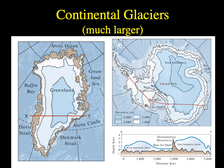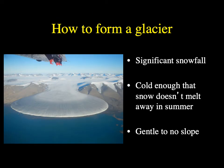Our two types of glaciers — mountain or alpine glaciers and continental glaciers — are both slow-moving sheets of ice; one is smaller and found at mountain tops, the other is larger and sits on a continental landmass. To form a glacier, we need a recipe: significant snowfall to pack together into ice, and temperatures cold enough throughout the year so the snow doesn't melt away in summer. We want to keep adding snow and ice every winter, so summers must be cold enough to preserve the previous year's accumulation.